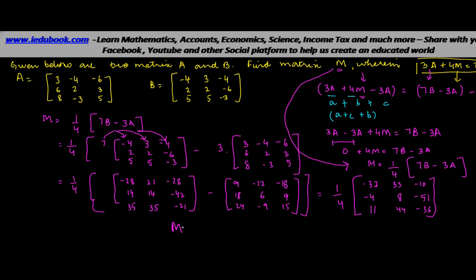So this is the value of M, which is your answer. If you want to further simplify this, you can divide by 4 under each one of them. So whenever the division happens, let's say if you want to drill this down, this will be minus 37 divided by 4. This will be 33 divided by 4. This will be minus 10 divided by 4 or minus 5 by 2. This will be minus 1. 11 by 4. This will be 2. This will be 11. This will be minus 51 divided by 4. And this will be minus 9. So both these are fine.